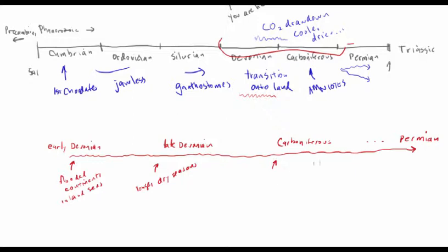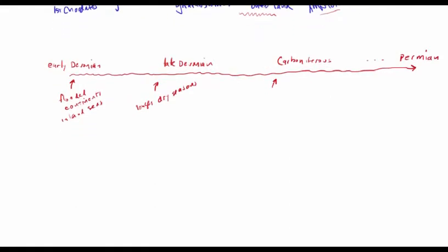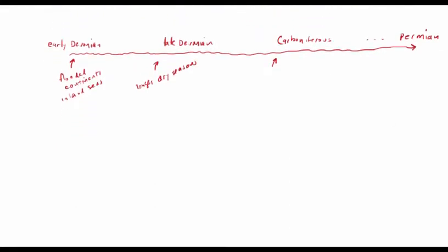As things become even drier during the Carboniferous with the CO2 drawdown, we see the origin of amniote vertebrates. With amniotes we've got the ability to complete an entire life history without ever having to become aquatic. I call amniotes the seed plants of the vertebrate world — they don't need to go back to their watery past; they can complete their whole life in dryland habitats. Now I want to superimpose onto this timeline that sequence of changes in the vertebrate lineage.